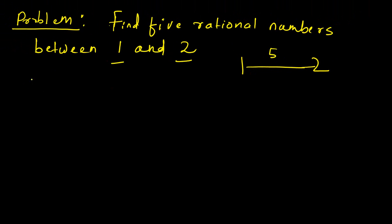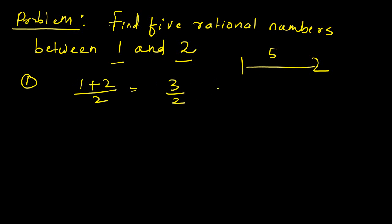There are two ways in which we can find them. The first way: the first rational number — you simply add these two numbers and divide by 2 to get a number between them. So, 3/2 is the first rational number. This is 1 and this is 2, and we get 3/2 somewhere here.